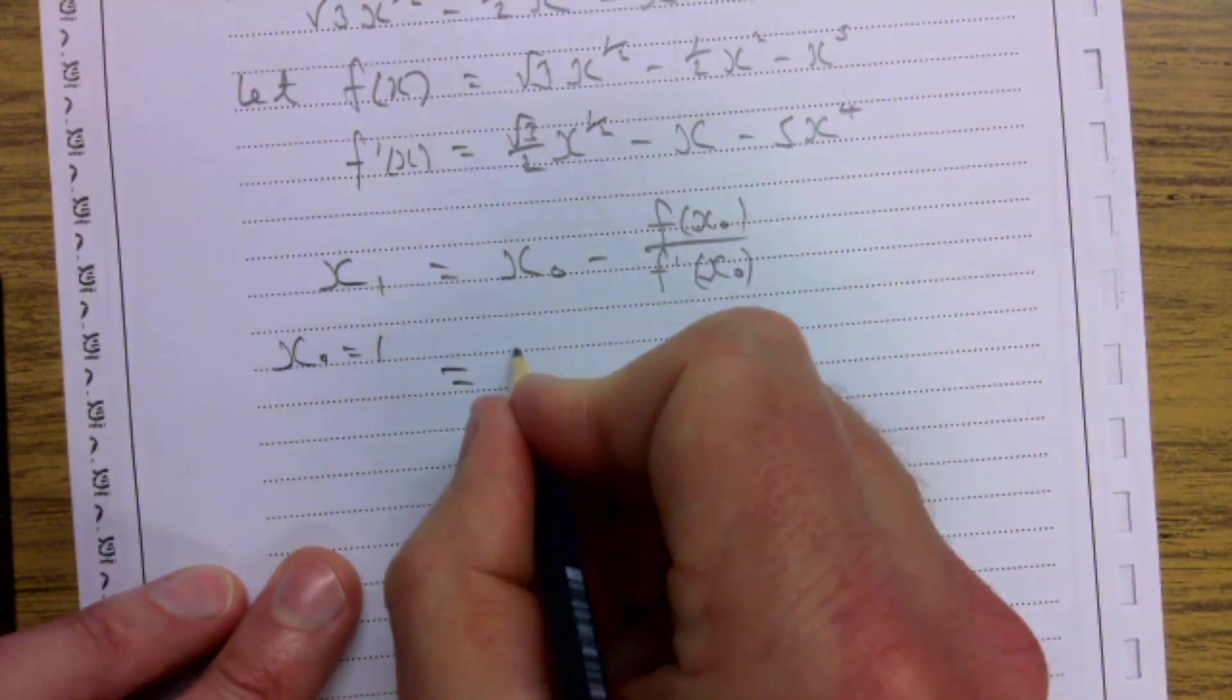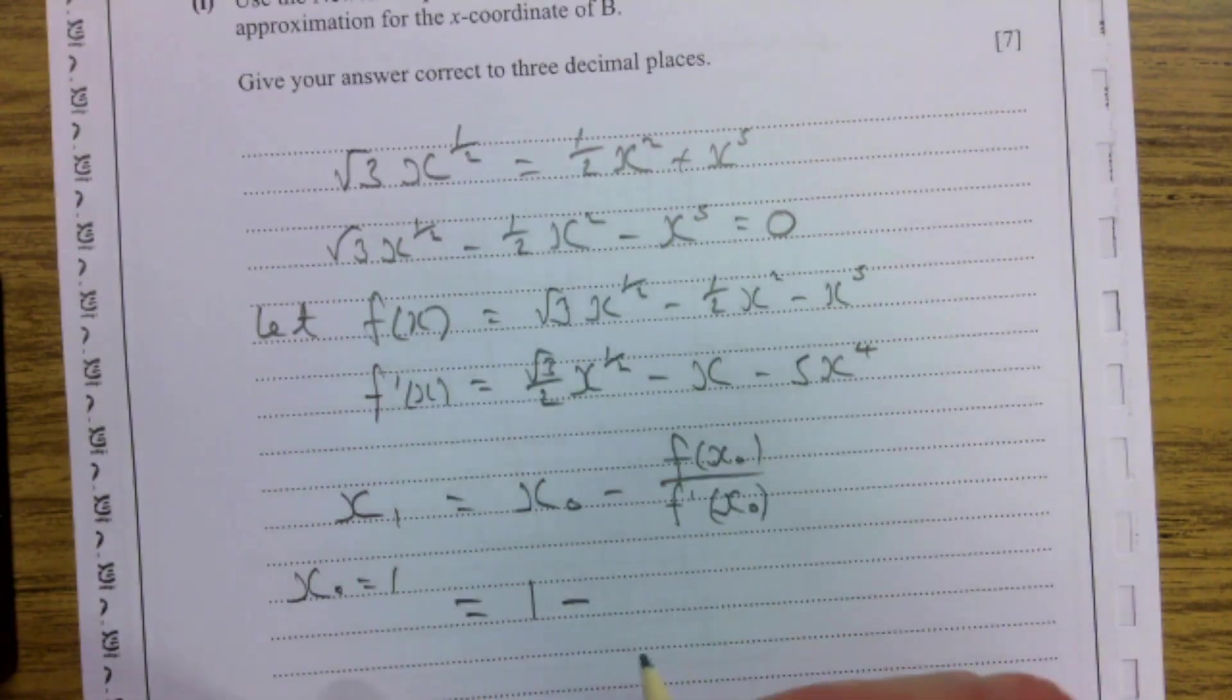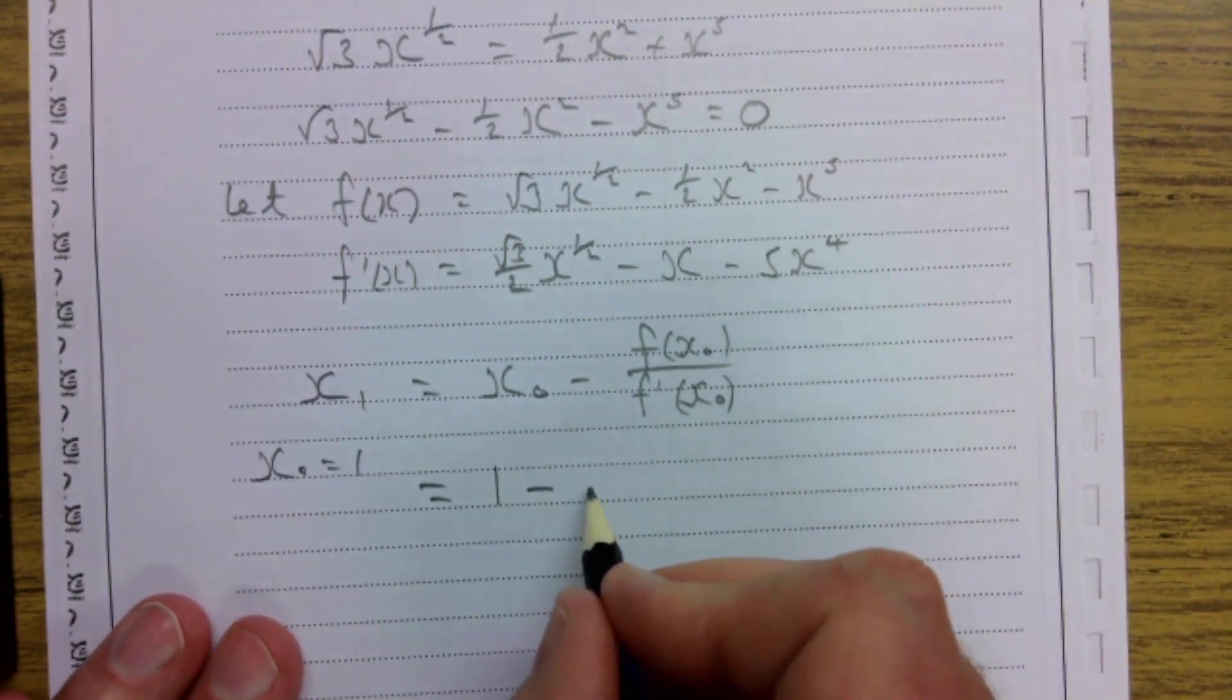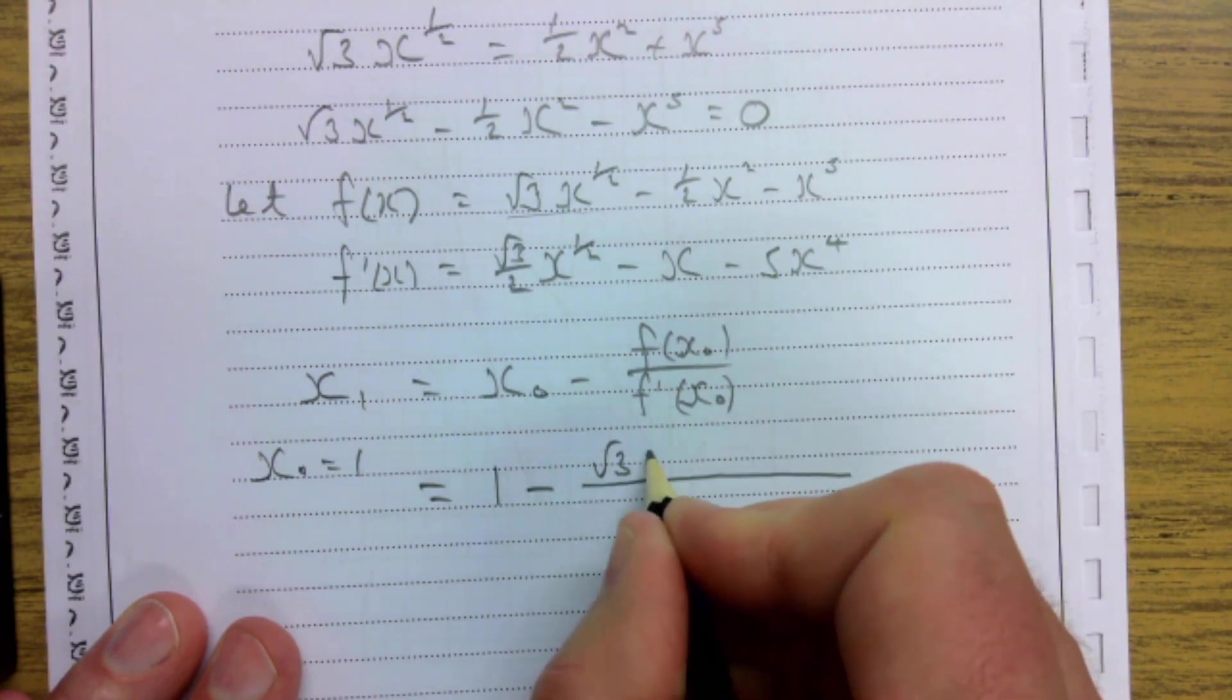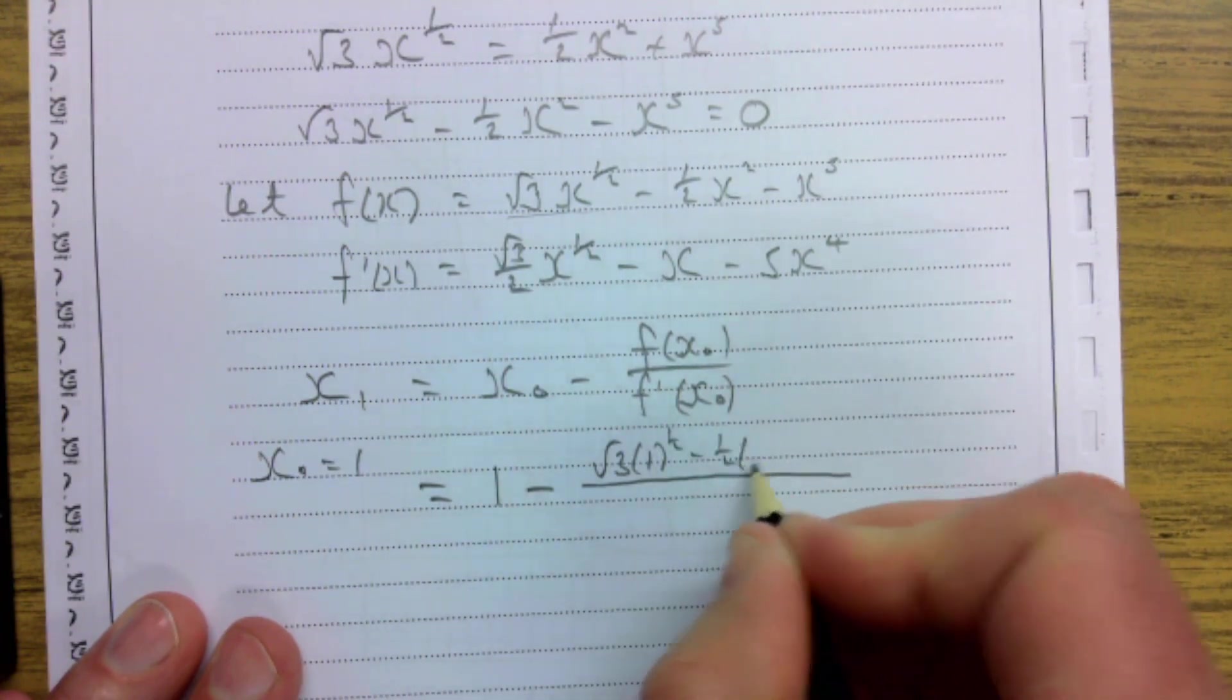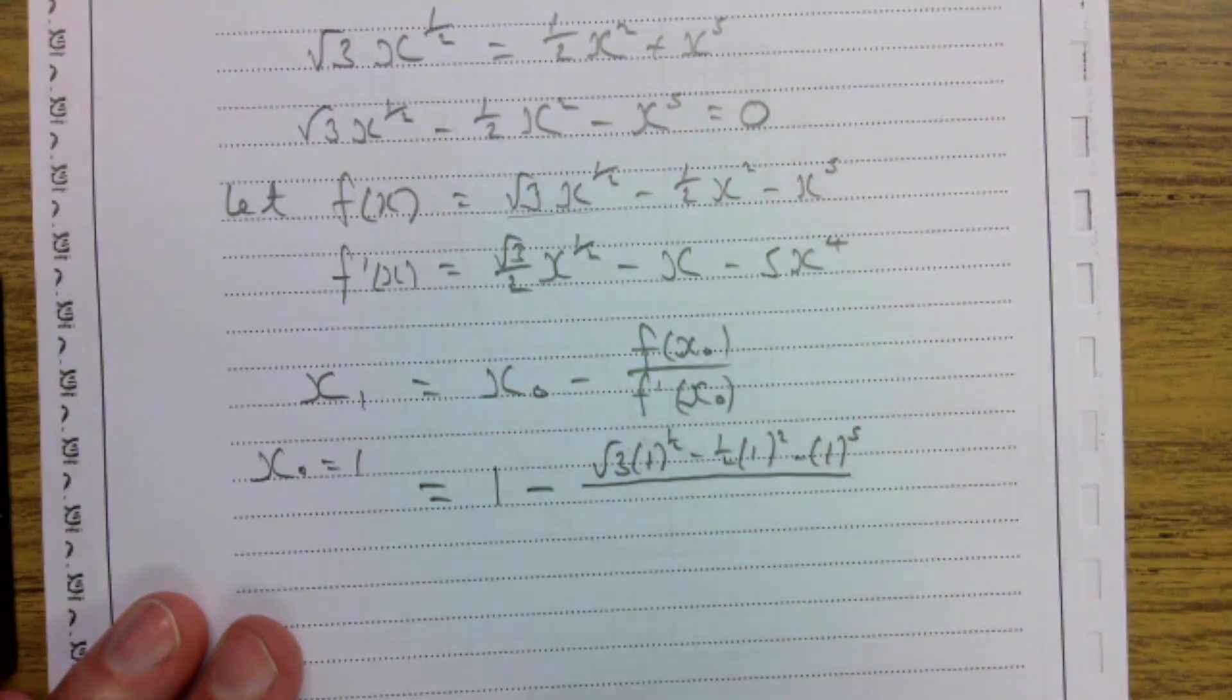So it's going to be 1 take away, and I'm then substituting this in here. So let me see, so you can make sure you can see everything you need here. 1 minus, so this is f(x₀), which is this one here. So it's going to be √3(1)^(1/2) - (1/2)(1)² - 1⁵.